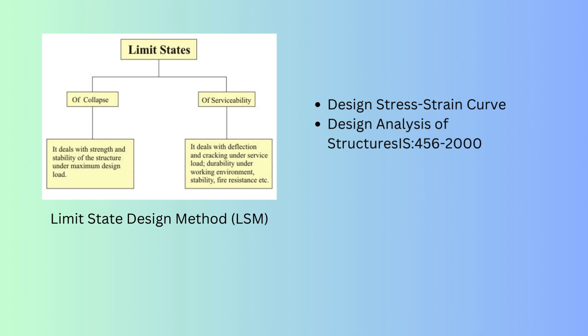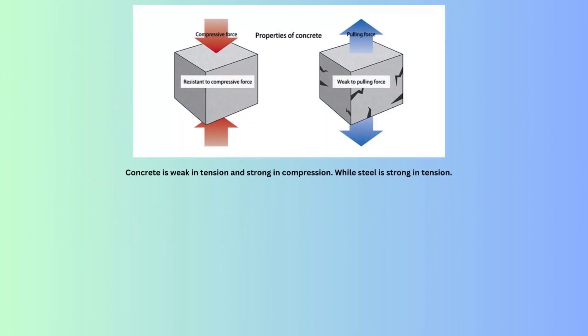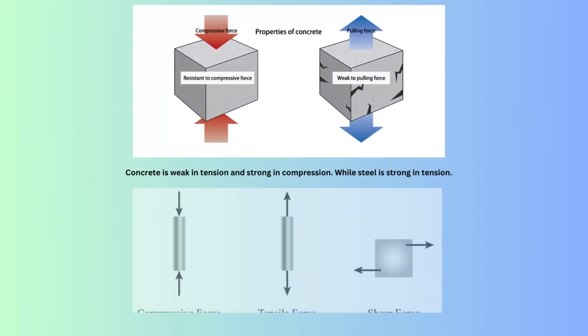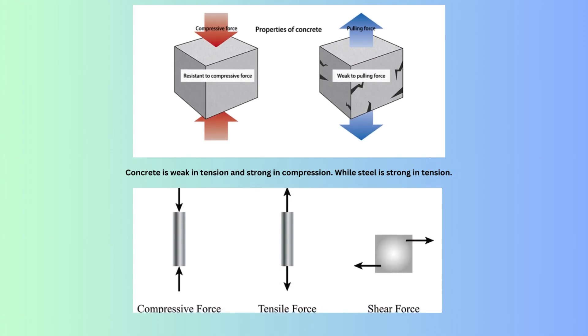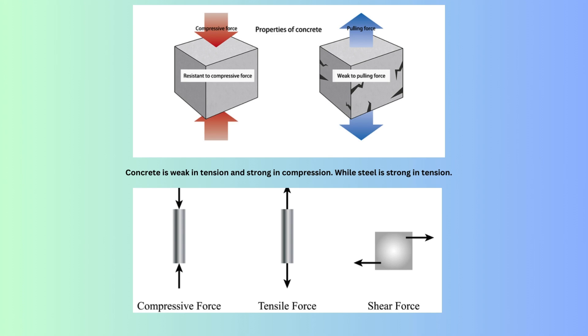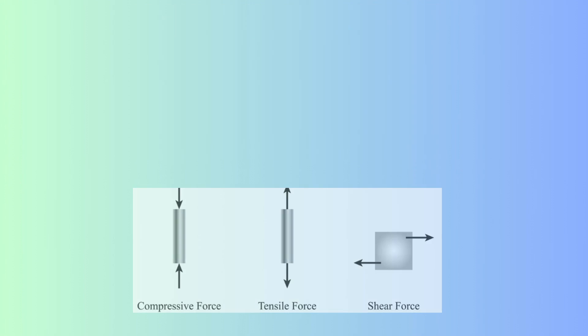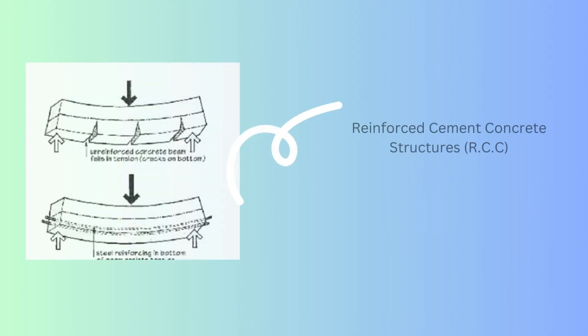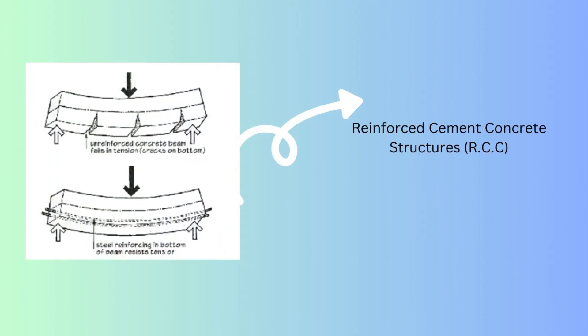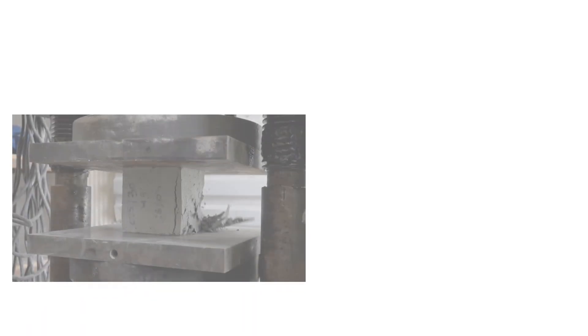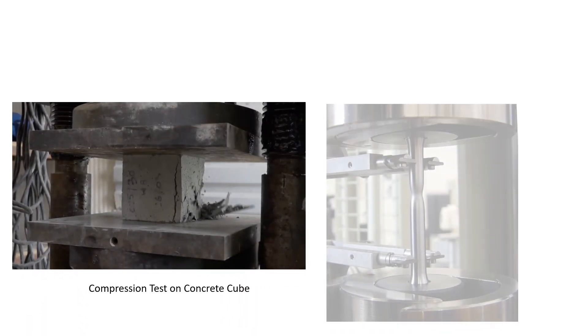Before we move to the stress-strain analysis, let's have an overview of concrete and steel reinforcement. We know that concrete is weak in tension and strong in compression, while steel is strong in tension. We incorporate steel in concrete to impart its tensile strength to concrete, giving us a reinforced concrete structure. In stress-strain analysis, concrete is tested in compression using a compression test, and steel is tested for tension using a tensile test.